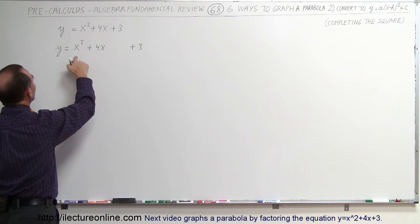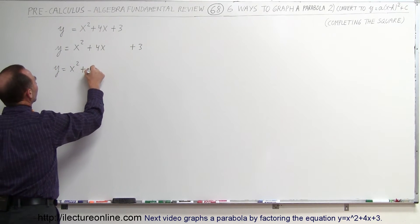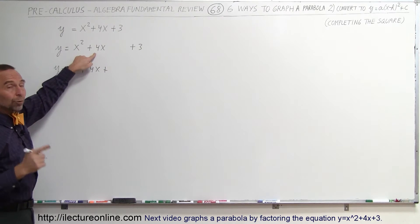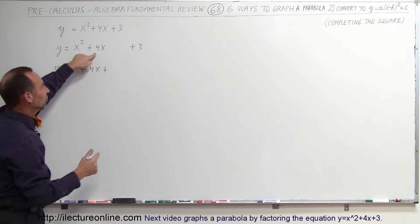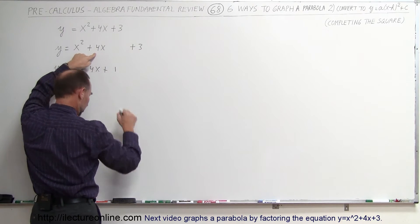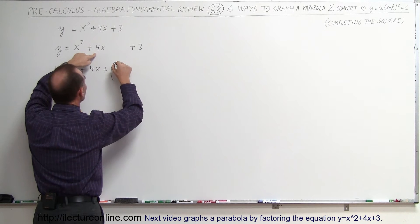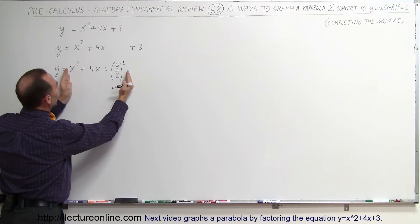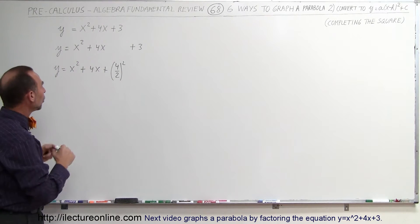So here, y is equal to x squared plus 4x plus — now you take the coefficient in front of the x term, the middle term, take half of that and square it. So that would be plus the quantity 4 divided by 2, squared. That's the term you're going to add. That will make this into a perfect square and we can then write it as a binomial squared.